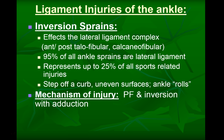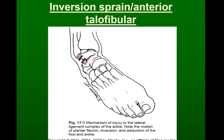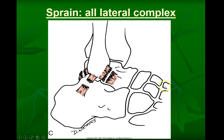The anterior talofibular is the most common sprain, though patients can sprain two or all three lateral ligaments. Grading is the same as other ligament sprains: grade one, two, or three. A grade three is a full tear. Having grade three tears to all three lateral ligaments would be a very significant lateral complex ankle sprain.